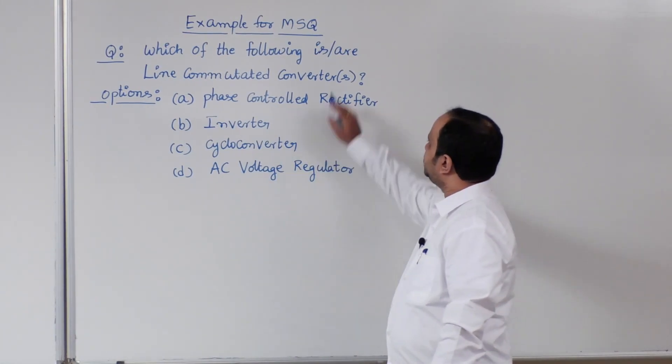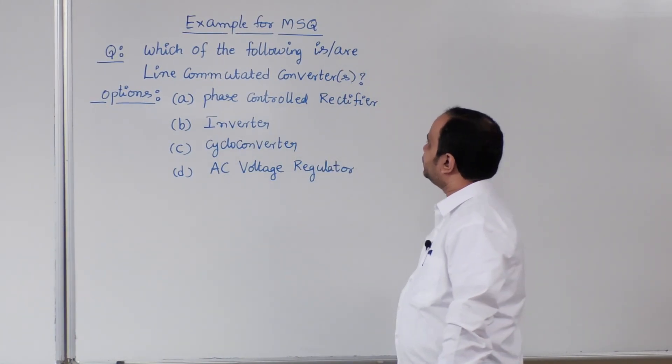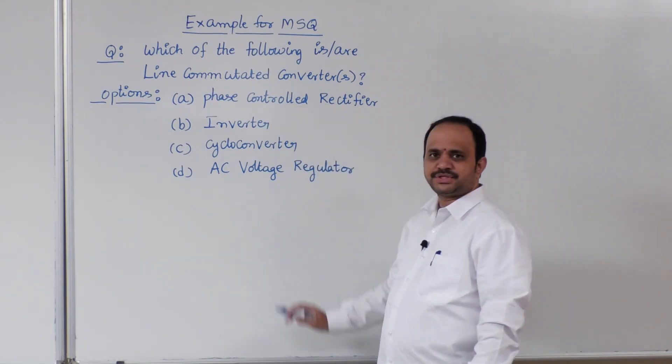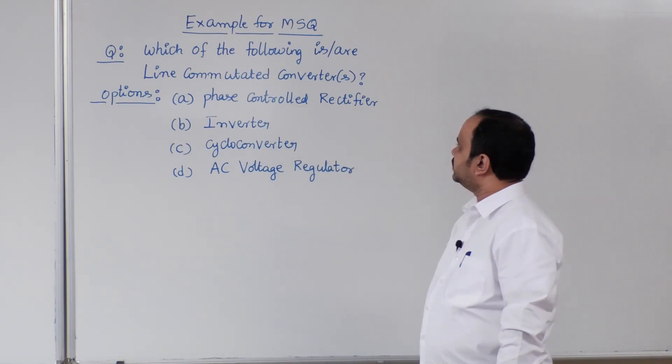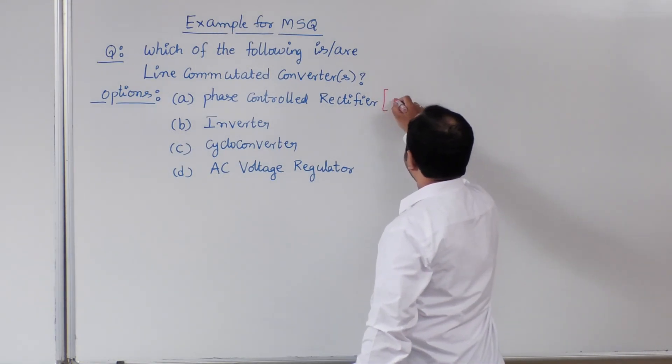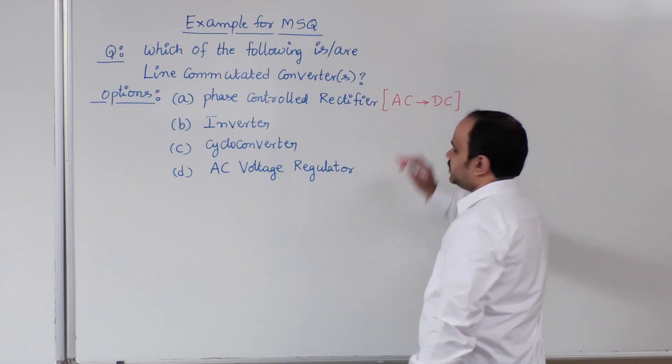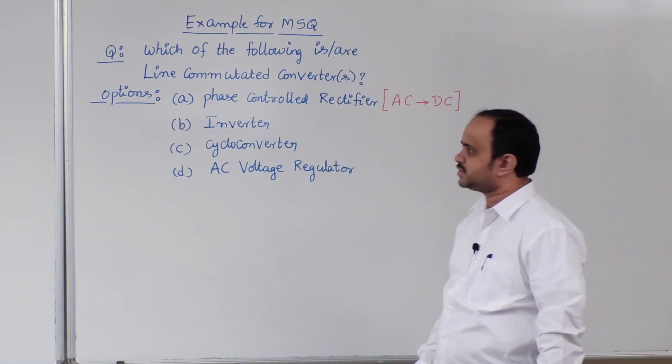Which of the following is line commutated converter or converters? There are four options are given here. Phase controlled rectifier. Basically, phase controlled rectifier will do AC to DC conversion.